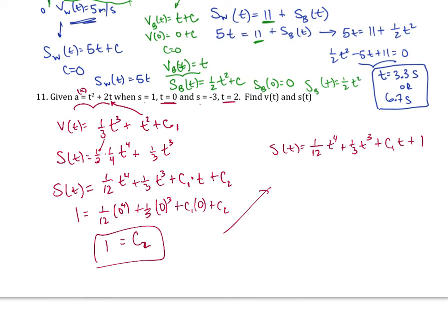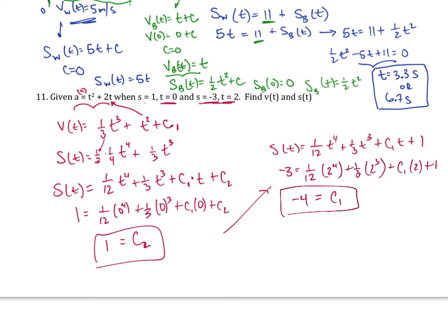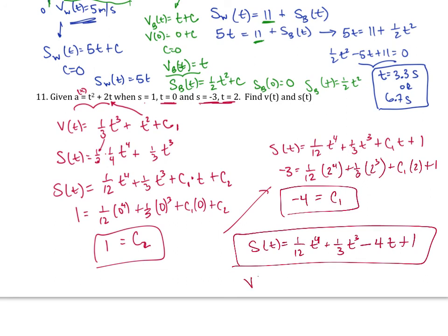Now using s equals negative 3 at t equals 2: negative 3 equals one-twelfth times 2 to the fourth plus one-third times 2 cubed plus C1 times 2 plus 1. Working this out gives C1 equals negative 4. So the final position is s of t equals one-twelfth t to the fourth plus one-third t cubed minus 4t plus 1. And the velocity is v of t equals one-third t cubed plus t squared minus 4.